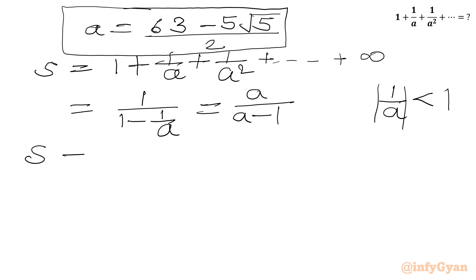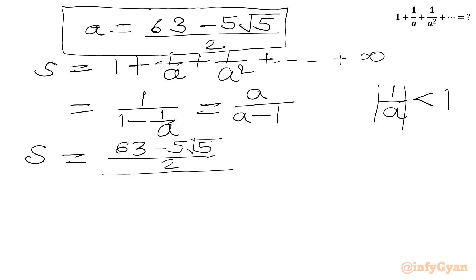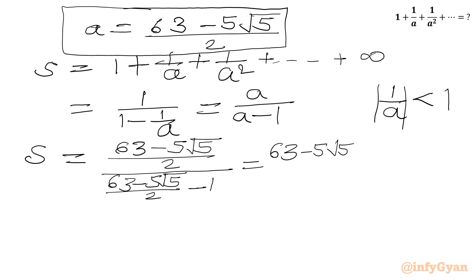Substituting the value of a, S equals [(63 minus 5√5) over 2] divided by [(63 minus 5√5) over 2 minus 1]. Simplifying the denominator gives (63 minus 5√5 minus 2) over 2, which is (61 minus 5√5) over 2. So S equals (63 minus 5√5) over (61 minus 5√5).